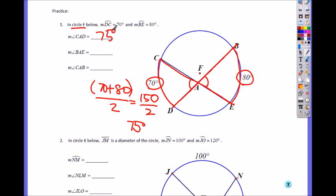and then divide by 2, which will give you 75 degrees. So if that's 75, we know this is also what? 75 by vertical angle.